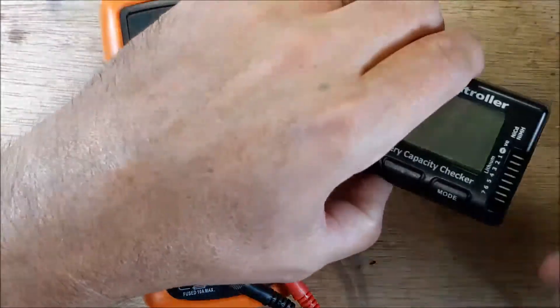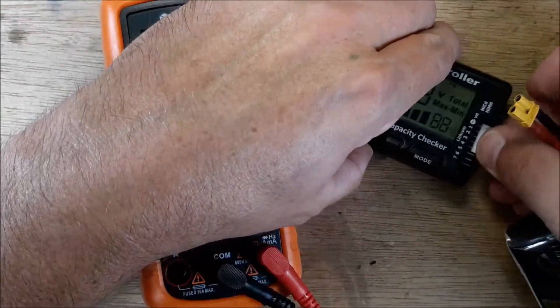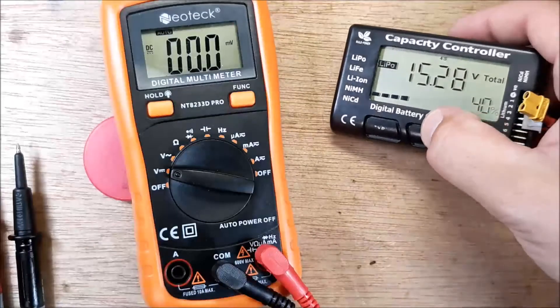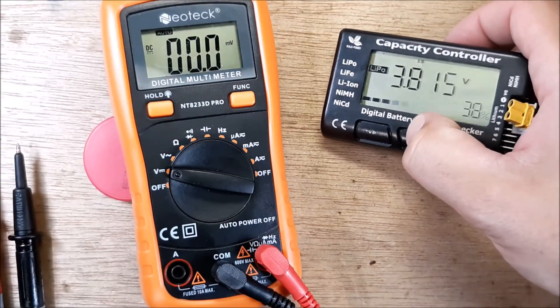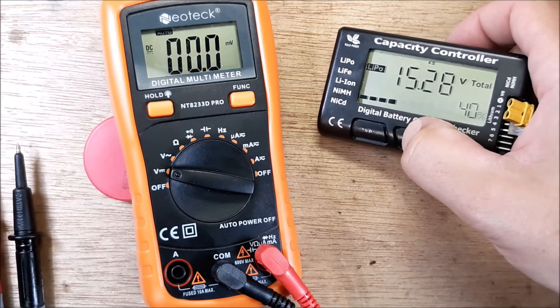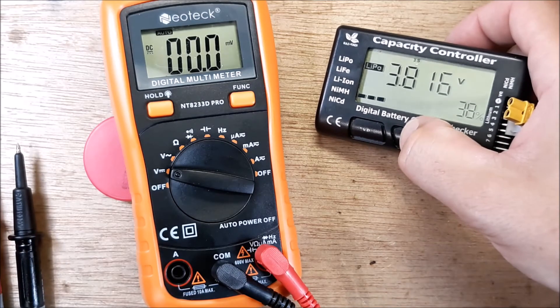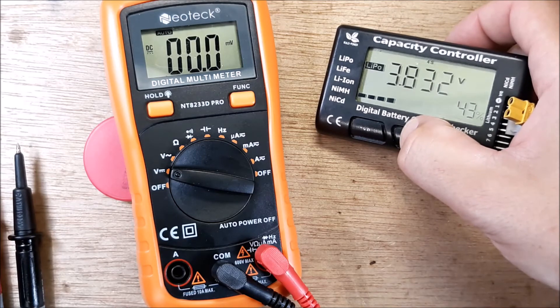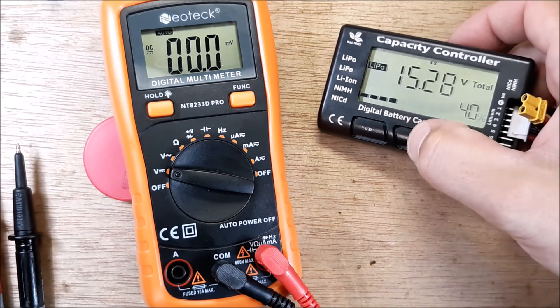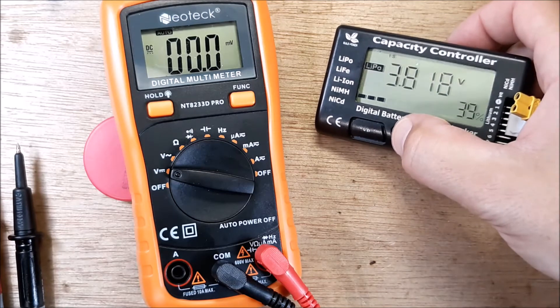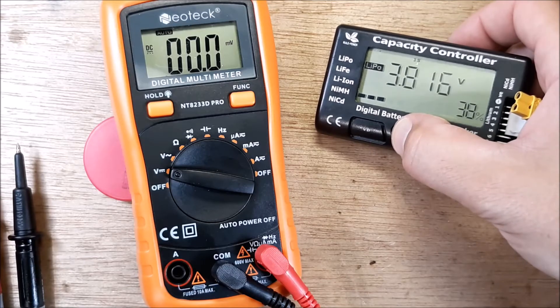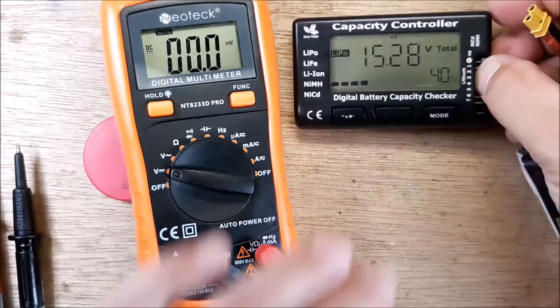That's why I say if you ever parallel charge, you must check each cell before you plug it in. One, two, three, four. Because if you go through here and you go 3.81 and nothing and 3.81 and 3.83, and you parallel charge that, you're probably going to have a fire.